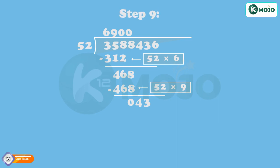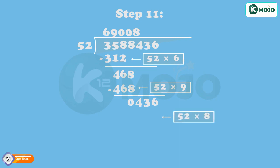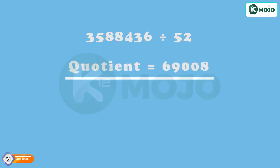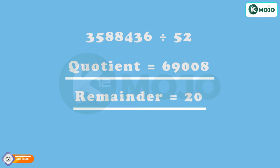Step 9: Bring down 6 making 436. Step 10: Divide 436 by 52. Step 11: 52 goes 8 times in 436. Step 12: 52 into 8 is equal to 416. Subtract to get 436 minus 416 is equal to 20 as remainder. Hence, 35,88,436 divided by 52 gives 69,008 as quotient and 20 as the remainder.